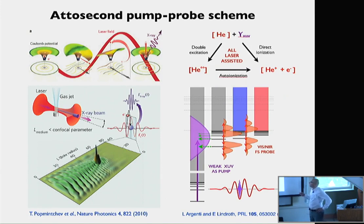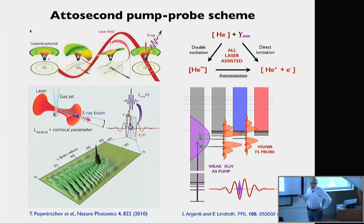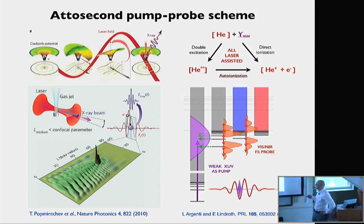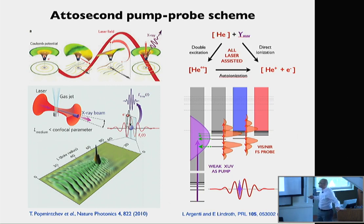In short, strong pulses can lead to the production of sub-cycle pulses of radiation in the extreme ultraviolet. When used in conjunction with a replica of the fundamental IR pulses, they can be used to do pump-probe spectroscopy that allows coherently exciting a wide range of electronic states in the ionization continuum of atoms and figuring out how the photo-emission dynamics unfold. To make sense of the experimental results from this technology, you do need assistance from theory, because otherwise the results are not easily interpreted.